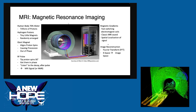We acquire the images in what's called Fourier space, K-space, or frequency space. The final step is image reconstruction, where we apply a Fourier transform to convert the frequency space to an image.